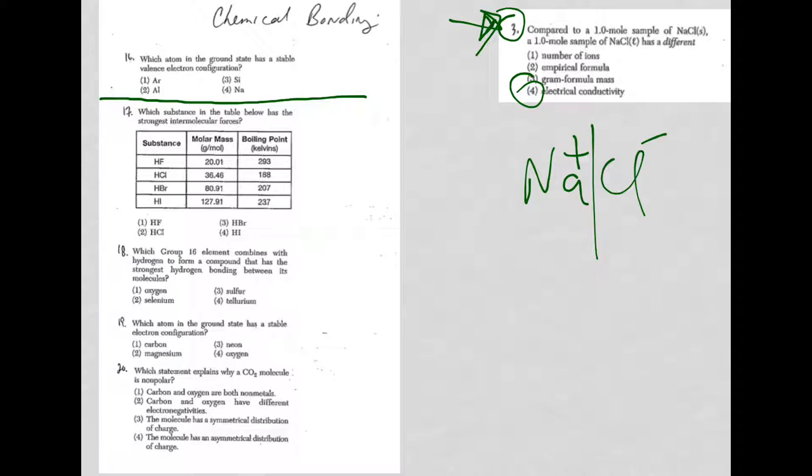Let's go back to the other bonding questions with question 17. Question 17 is asking us about the strongest intermolecular forces, and here's our molecules. You have to look at the formula for the molecule, and since you have two different non-metals, you're going to have what's called a dipole-dipole attraction.